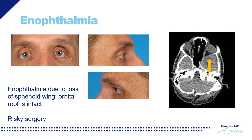If it is just the sphenoid wing that is lost, enophthalmos can occur. This is seen in this patient where the upper part of the orbit is still intact and only the sphenoid wing was lost, causing the eyeball to move backwards — presenting as enophthalmos. The patient requested correction, but we explained this would be very risky surgery putting his vision at risk. We considered the deformity too mild to justify all the risks involved in reconstructing the sphenoid wing.